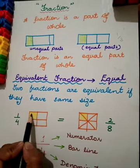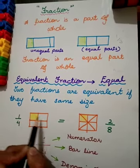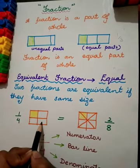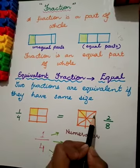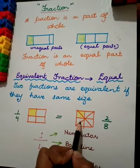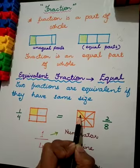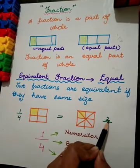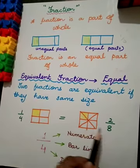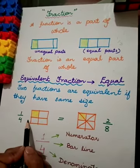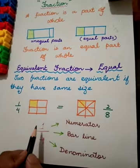Here, 1 part is shaded. The shaded part goes on the upper side and the total parts 1, 2, 3, 4 go on the lower side, so it is 1 by 4. Now look here — total parts are 8, and 2 parts are shaded, so we write 2 by 8. Both 1 by 4 and 2 by 8 are representing the same thing, but the numbers are different — this is equivalent fractions.